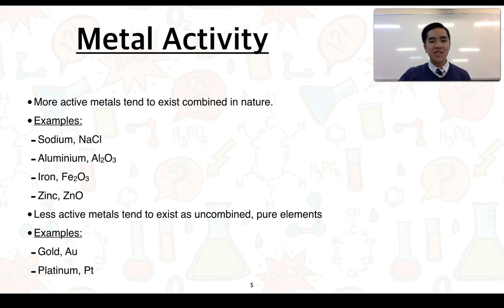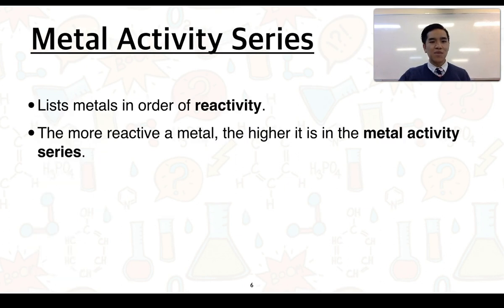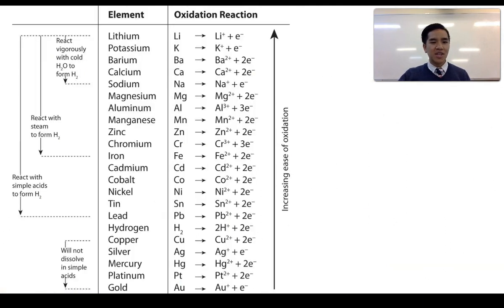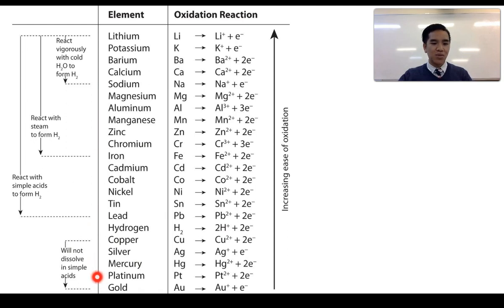Less active or reactive metals tend to exist as uncombined pure elements, so they don't have a large tendency to become oxidised. From this, we can use what we call a metal activity series, which essentially lists metals in order of reactivity, so that the more reactive a metal, the higher it is in the series. This image here shows an example of a metal activity series going from the most active to the least active — that is, the most likely to become oxidised and lose electrons through to the metals that are least likely to become oxidised and lose electrons.